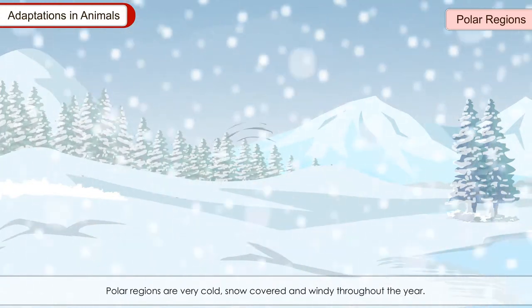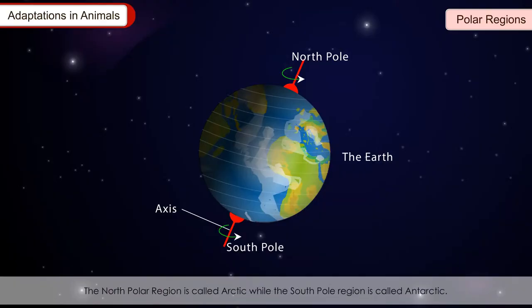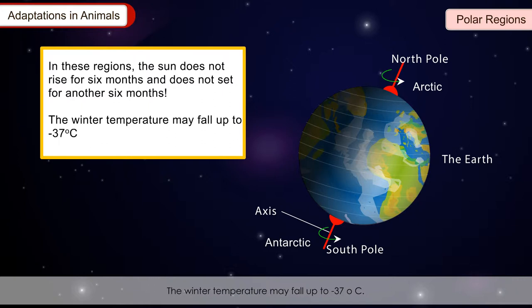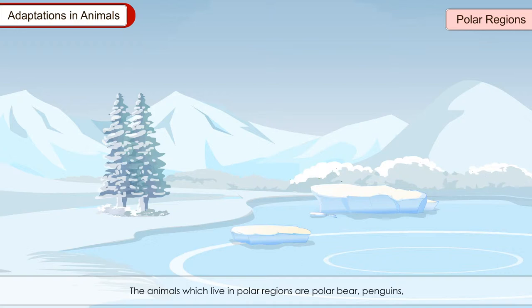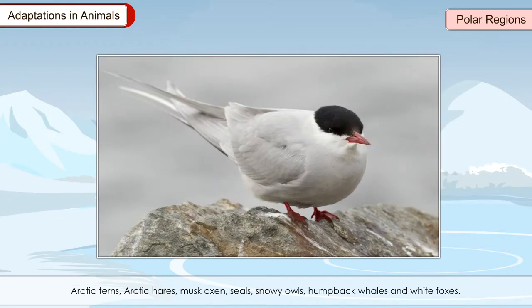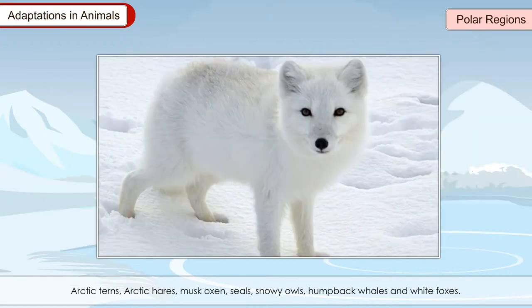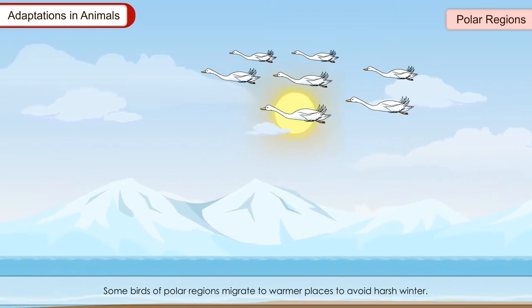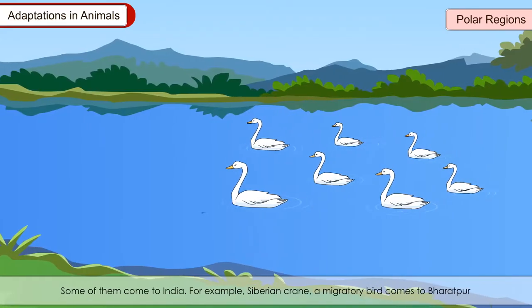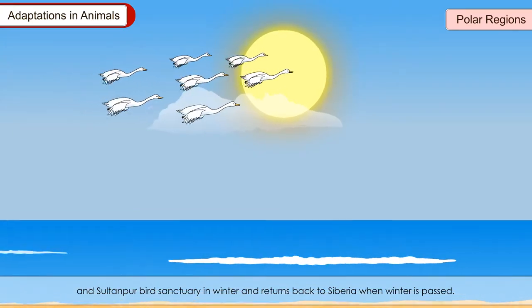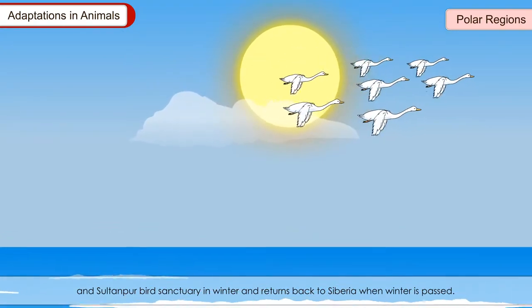Polar regions are very cold, snow-covered and windy throughout the year. The north polar region is called Arctic, while the south polar region is called Antarctic. In these regions, the sun does not rise for six months and does not set for another six months. The winter temperature may fall up to minus 37 degrees Celsius. The animals which live in polar regions include polar bears, penguins, Arctic terns, Arctic hares, musk oxen, seals, snowy owls, humpback whales and white foxes. Some birds of polar regions migrate to warmer places to avoid harsh winter — some come to India, for example the Siberian crane, a migratory bird, comes to Bharatpur and Sultanpur bird sanctuary in winter and returns to Siberia when winter is past.